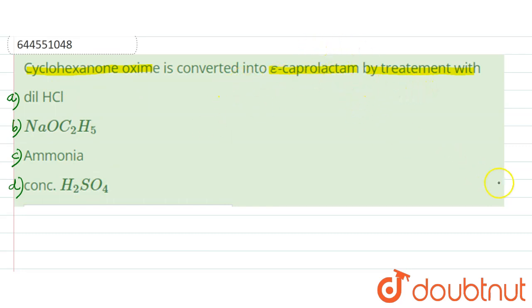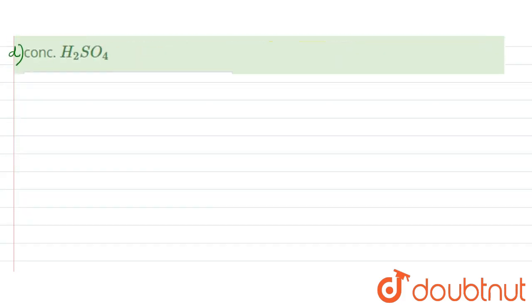So this kind of reaction is Beckman rearrangement. Okay, so it is one of the most important industrial reactions for the production of caprolactam. So in Beckman rearrangement, it is an acid-catalyzed rearrangement...